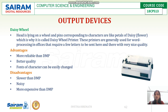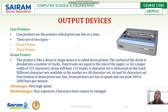Advantages of daisy wheel printers: they are more reliable than dot matrix printers (DMP), print quality is better, and fonts can be easily changed — which is difficult in dot matrix printers since pins must be selected per font. Disadvantages: they are slower than DMP, noisy, and more expensive than DMP.